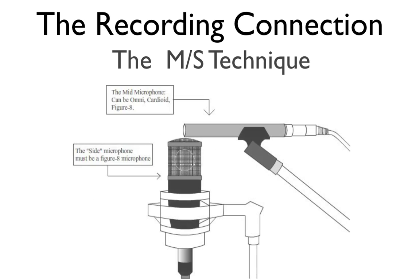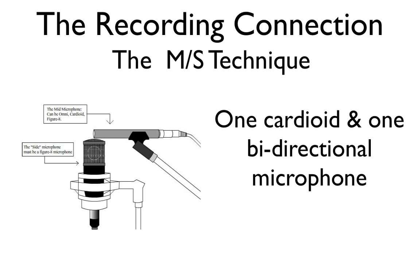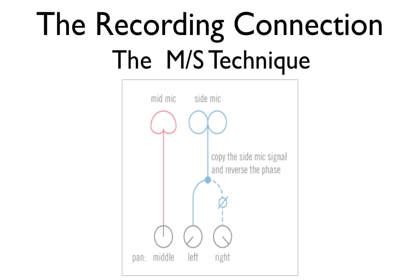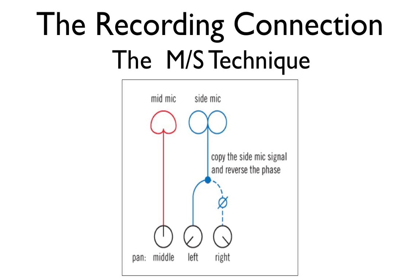Now let's go over the MS stereo technique. The MS, or mid-side stereo technique, involves a cardioid microphone element and a bidirectional mic element. These two microphones are usually housed in a single case or mounted in a coincident arrangement. The cardioid mic faces directly at the sound source and picks up primarily the on-axis sound, while the bidirectional mic faces left and right and picks up the off-axis sounds. Those two sounds are combined via the MS matrix to give a variable controlled stereo image. By adjusting the level of mid versus side signals, a wider or more narrow image can be created without moving the microphones. This technique is completely mono-compatible and is widely used in broadcast and film applications.